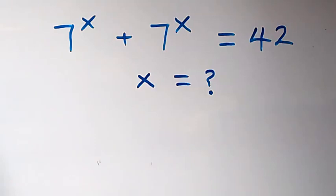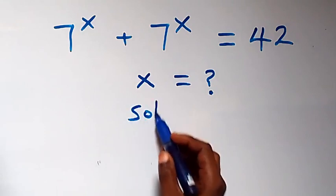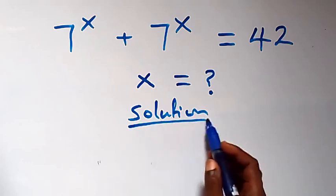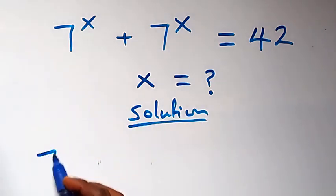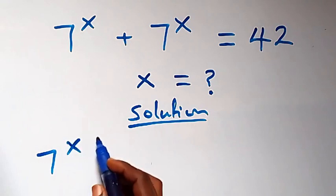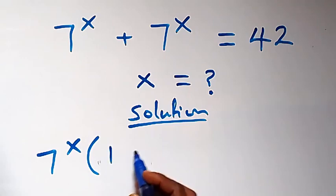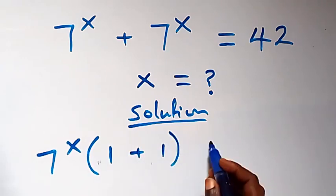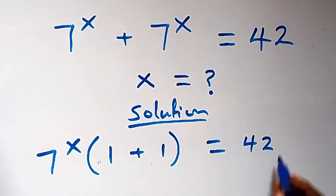Hello, you are welcome. How to solve this nice exponential equation. From what is given, let's factor 7 raised to power x out. Then we have 7 raised to power x in brackets, one plus one left here, which equals 42 on this side.